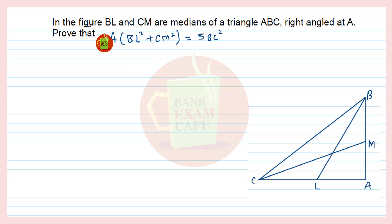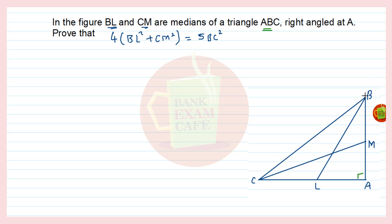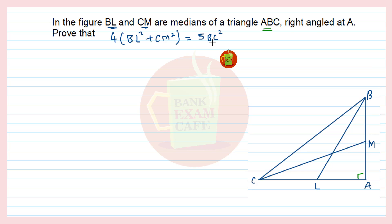Here is a question on the screen. In the figure, BL and CM are the medians of triangle ABC right-angled at A. This means angle A is 90 degrees, so ABC is a right-angle triangle. BL and CM are medians, which means M is the midpoint of AB and L is the midpoint of AC. We have to prove that 4(BL² + CM²) = 5BC².